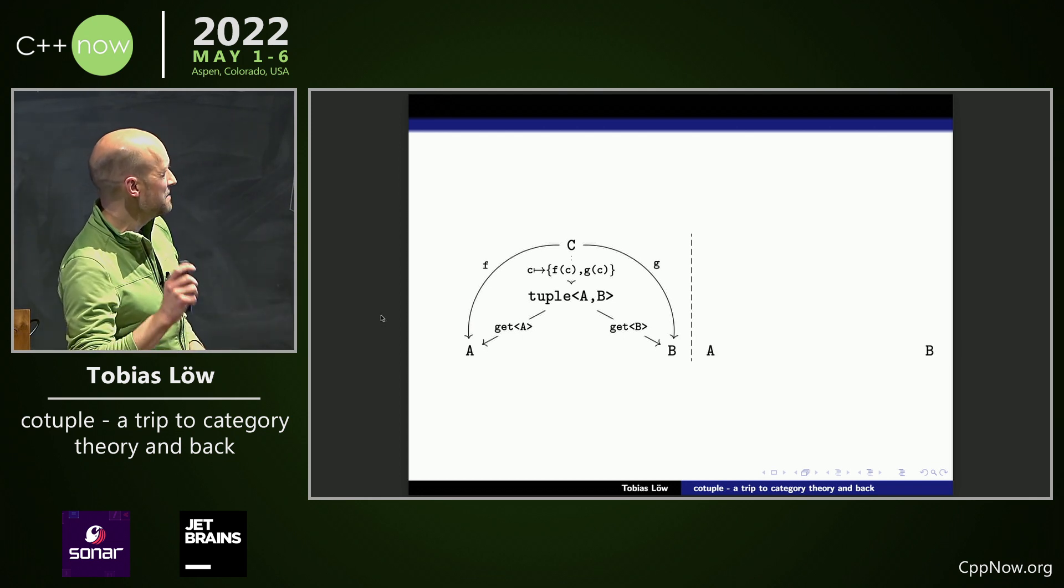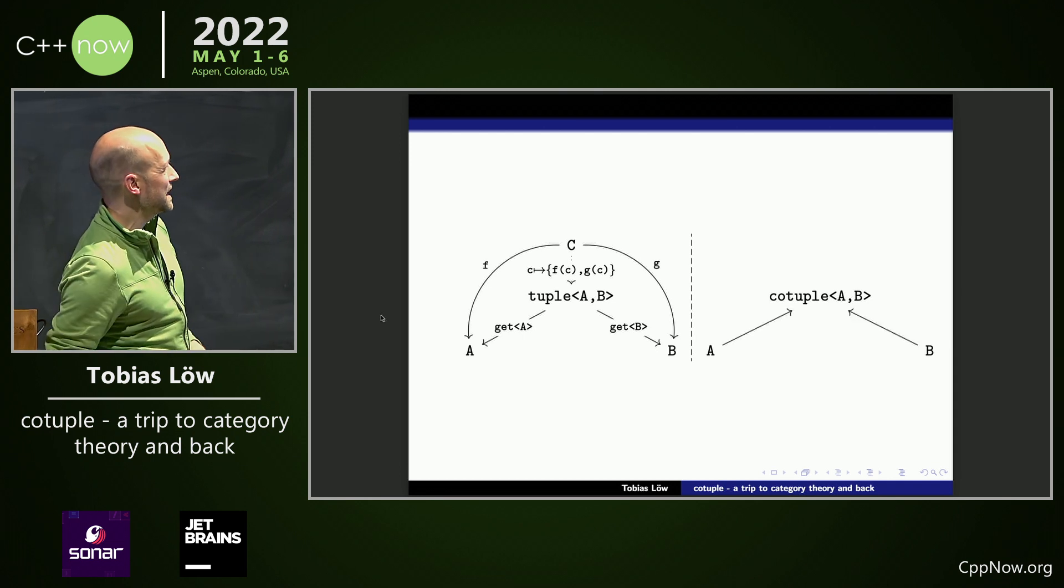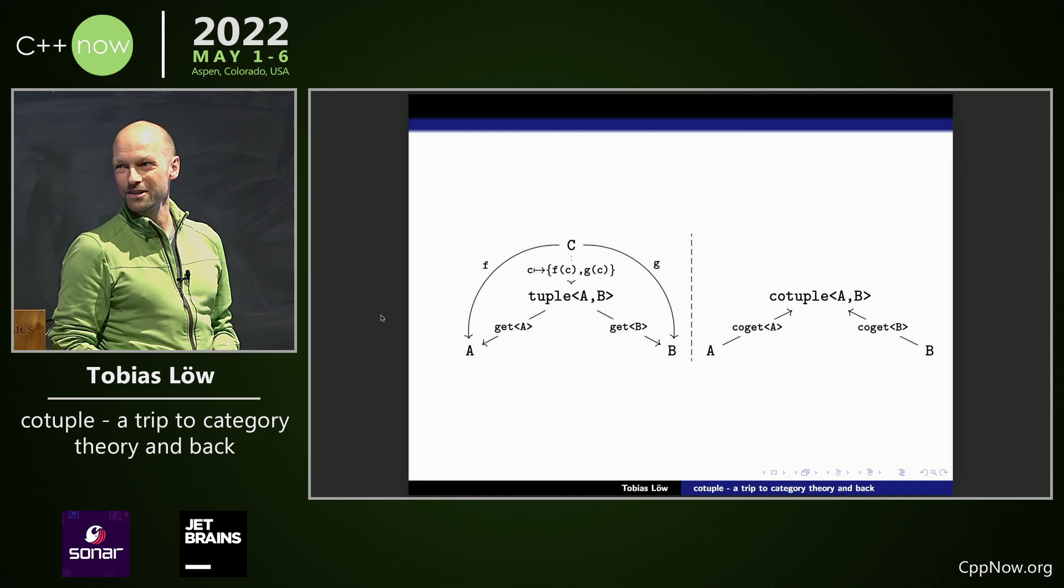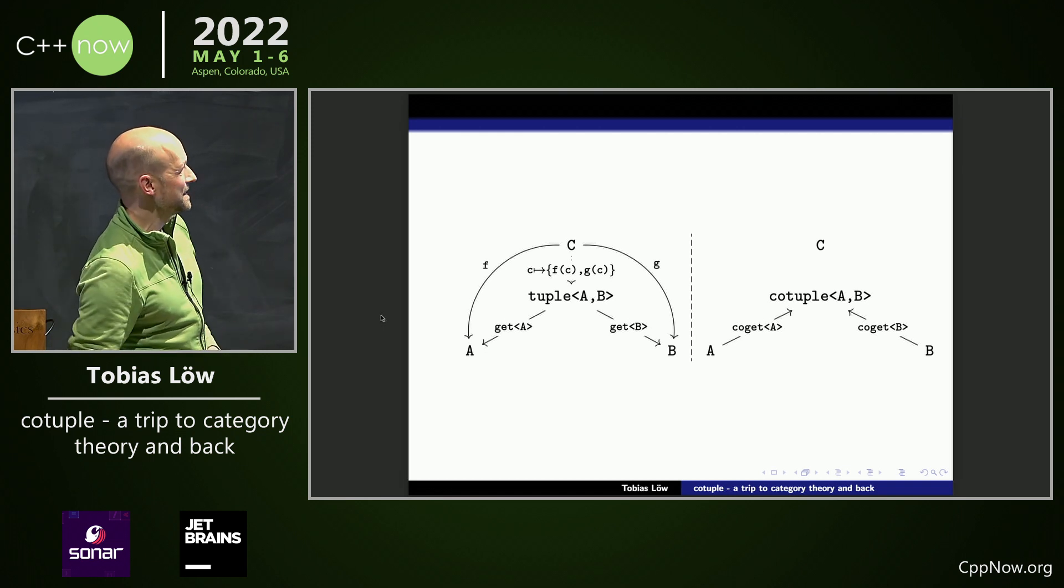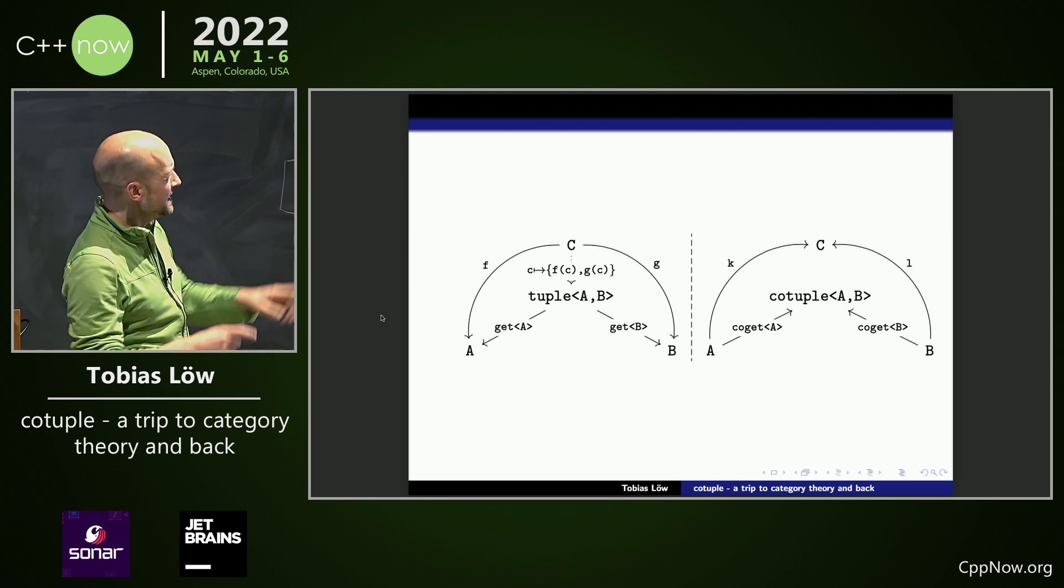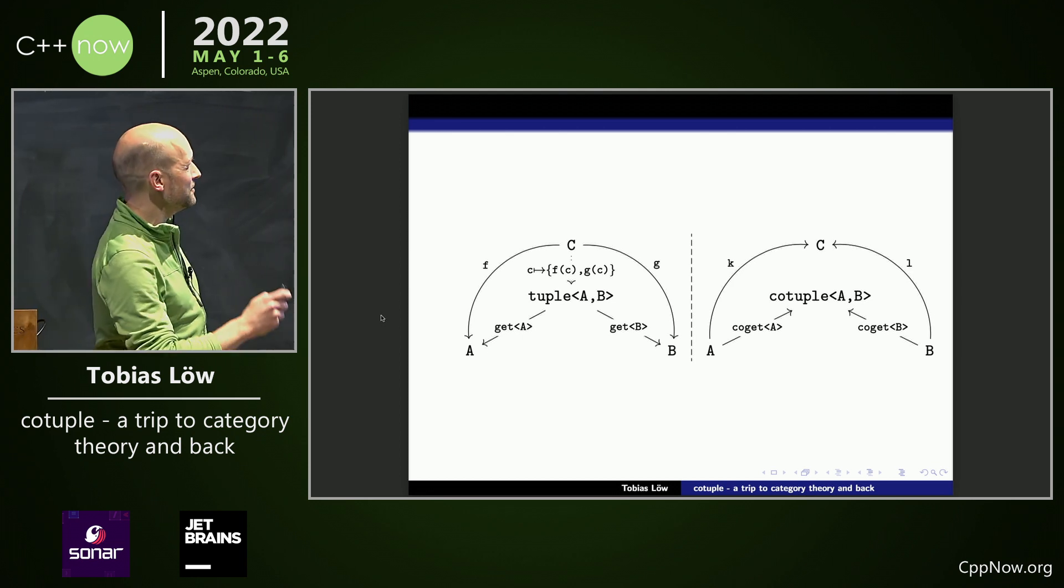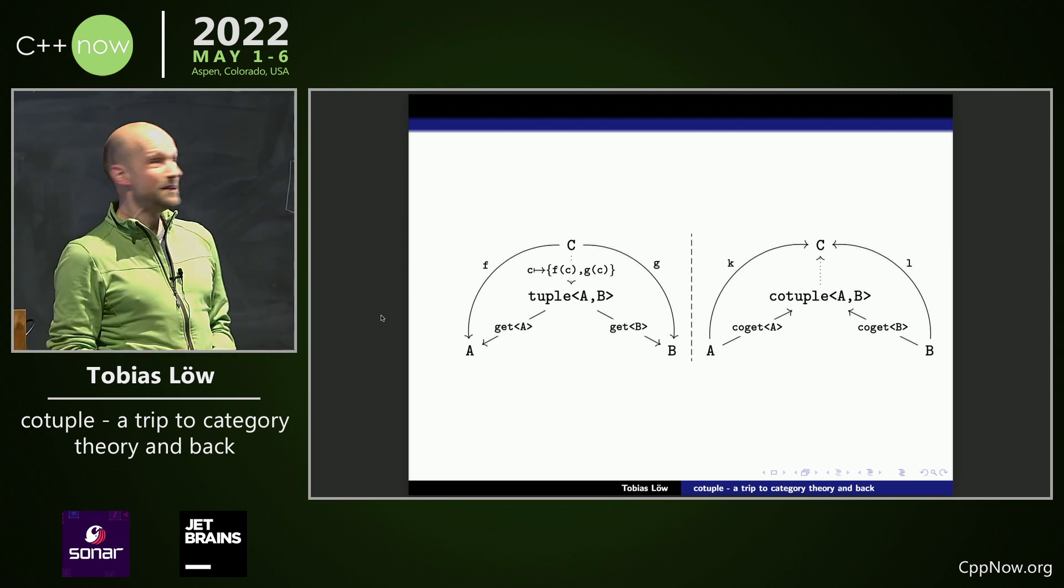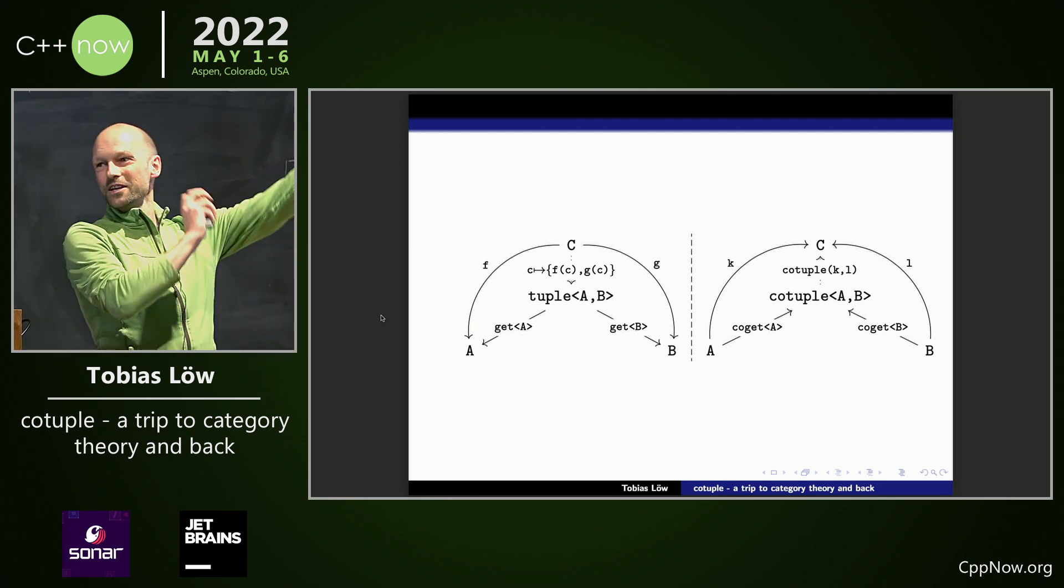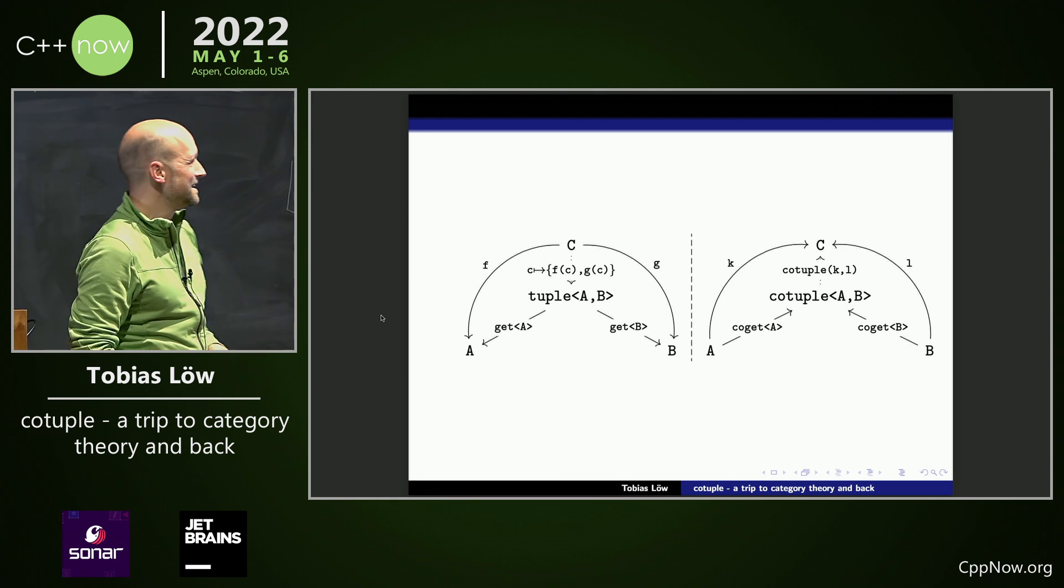So, we start again with A and B, then we build a co-tuple. And we get two functions into the co-tuple, let's call them co-getA, co-getB. And we get another C, and now we get functions into C, I call them K and L. And we get, again, this unique property, now going to C, and this is, let's call it co-tuple K and L.